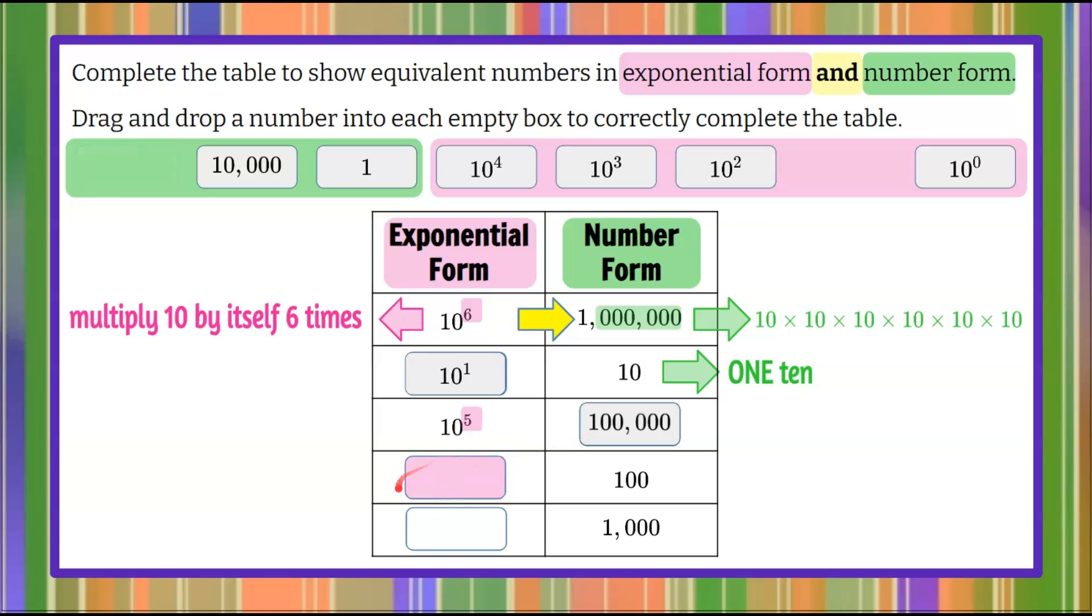All right, now we need to find this box right here equal to 100. So we have our 10 here plus one more. We can see that we have two zeros, so we need an exponent of two and bring it over.